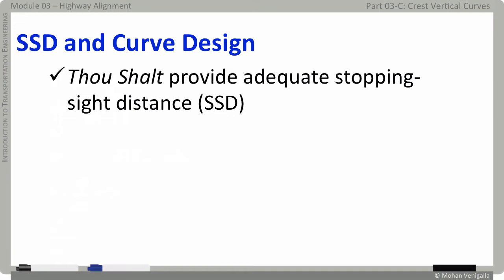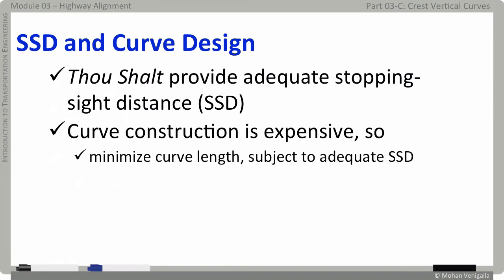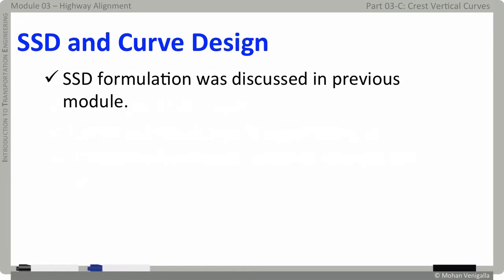Thou shalt provide adequate stopping distance on vertical curves. Of course, we know stopping distance is for safety and then there is cost consideration that you need to take into account as well. Curve construction is expensive, very expensive. Therefore, minimize curve length subject to adequate SSD. We discussed the formulation for stopping sight distance in previous module as ds equals braking distance d plus reaction distance d sub r.